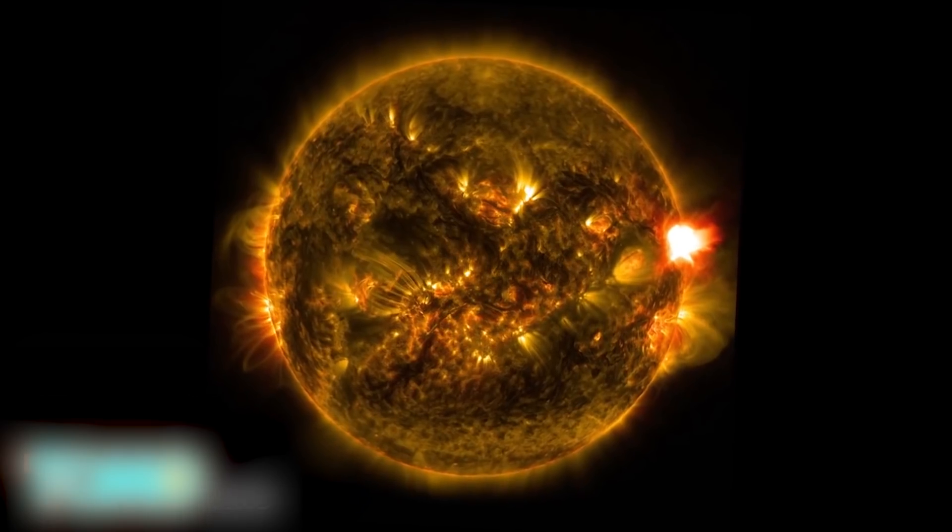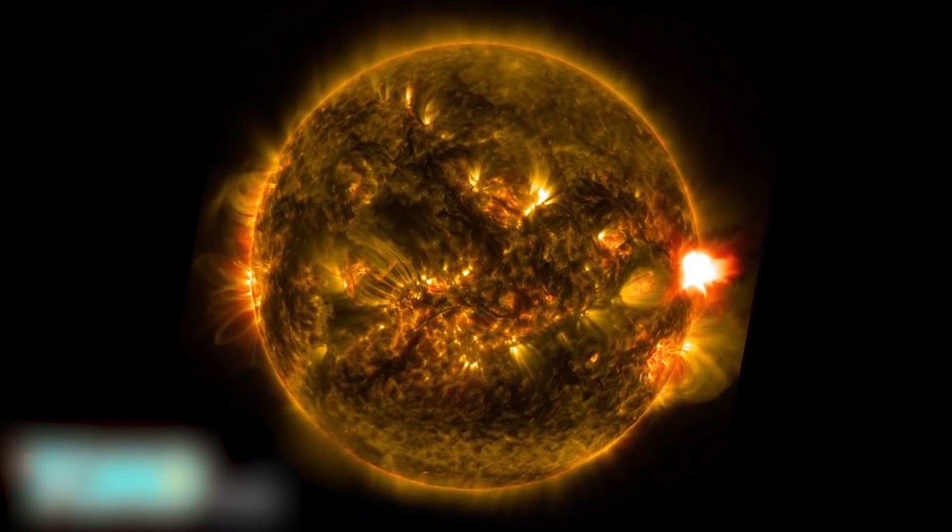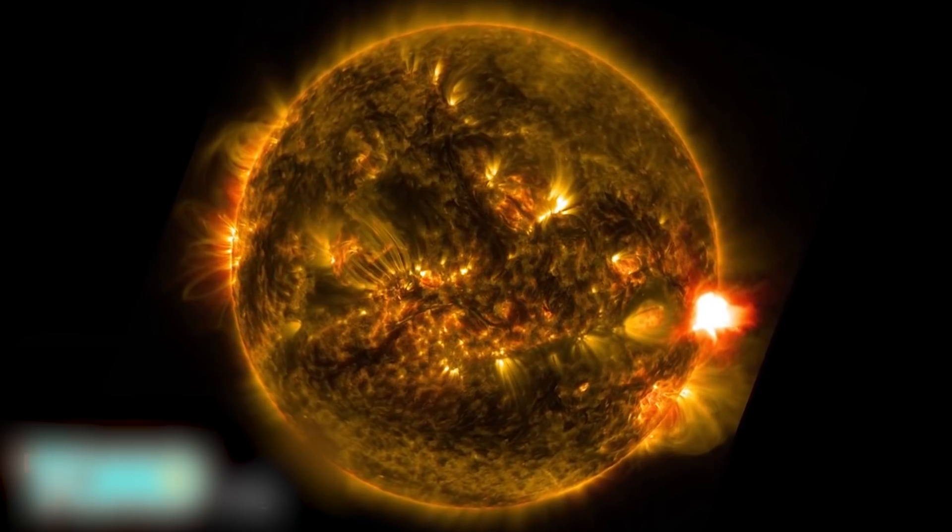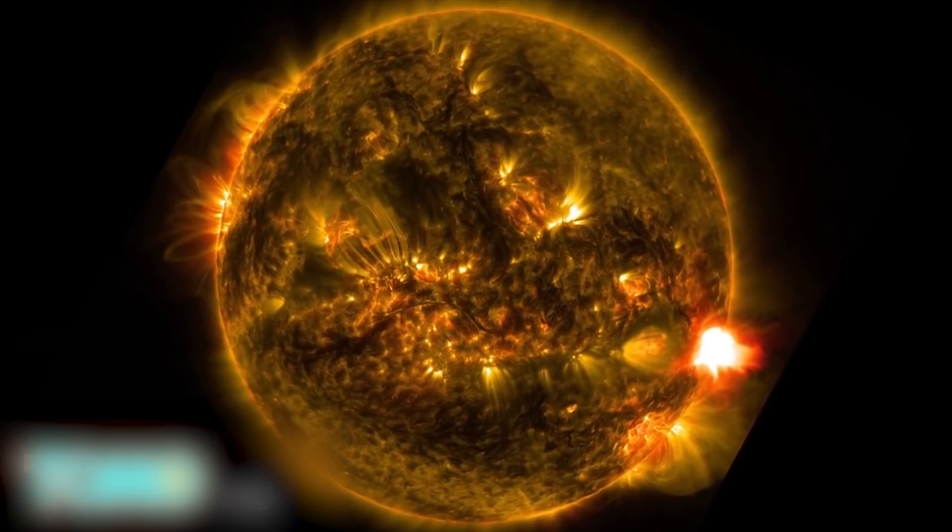The largest solar eruption in recorded history, dubbed the Carrington Event, struck the Earth in September of 1859. The solar flare disrupted the telegraph system worldwide and damaged the planet's ozone layer.